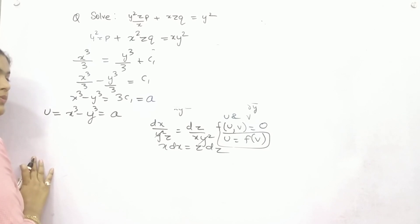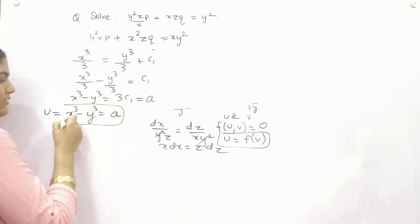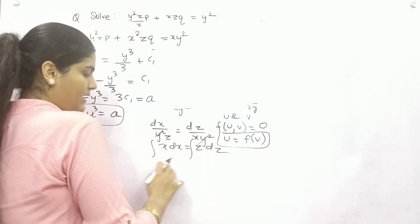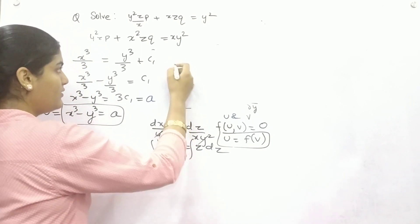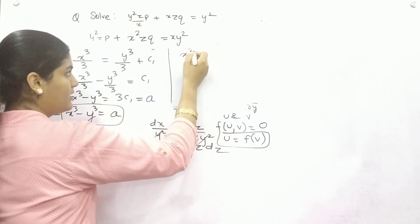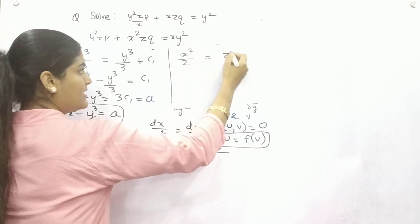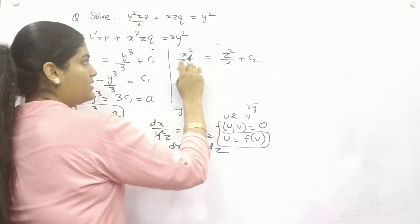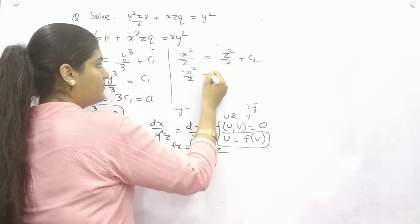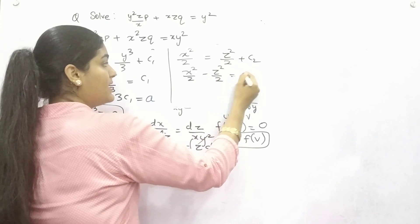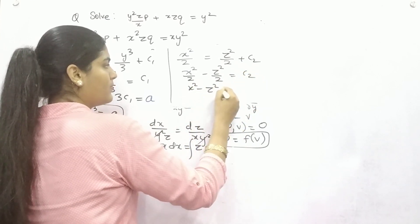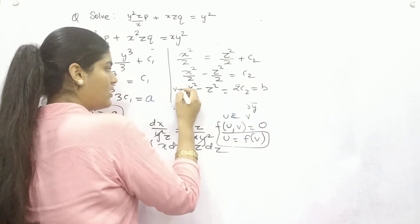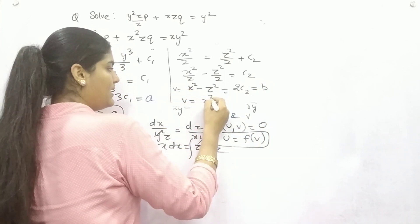This is your function u: x³ − y³. Now take the second pair and integrate both sides: x·dx = z·dz. You get x²/2 = z²/2 + c₂. Taking to the left side and taking 2 as common: x² − z² = 2c₂. Consider 2c₂ as another constant b. This is your second function v: x² − z².